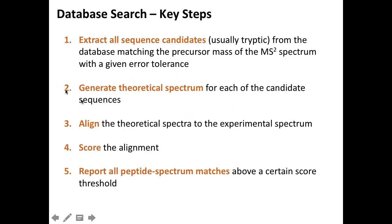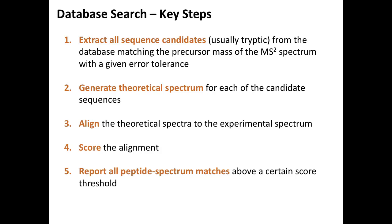For each candidate sequence — and that's not millions, but hundreds depending on mass tolerance and database size — you generate theoretical spectra. You then align and score these theoretical spectra to the experimental spectrum. Finally, you report all the peptide-spectrum matches, abbreviated as PSMs. A PSM is not really an identification — it's just that one of these spectra matches a theoretical sequence with a score. At some point, we need to separate PSMs from what we would consider reliable identification.